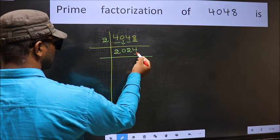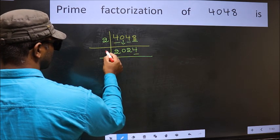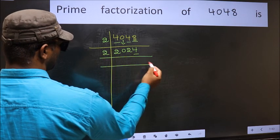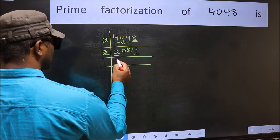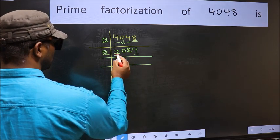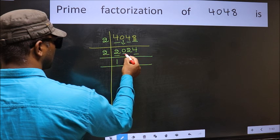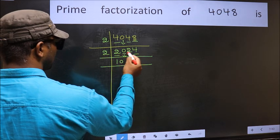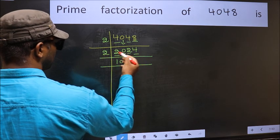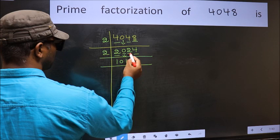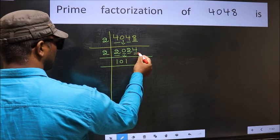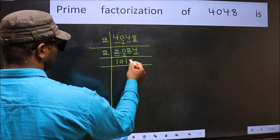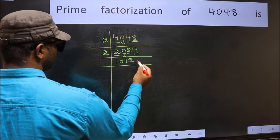Now the last digit 4 is even, so take 2. First number 2 — when do we get 2 in the 2 times table? 2 times 1 is 2. The other number 0, bring it down. The other number 2 — 2 times 1 is 2. The other number 4 — 2 times 2 is 4.